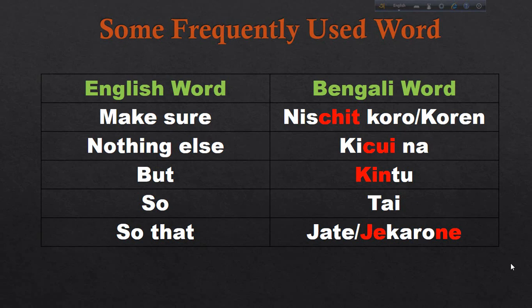In the first slide you can see 'make sure'. In Bengali we call it 'Nishchit Koro' or 'Nishchit Koren'. When you are talking with your friends or family, then you can say 'Nishchit Koro'. The respectful word is 'Nishchit Koren'. 'Nishchit Koro' is used for friends, family, and close persons, and 'Nishchit Koren' is used for your senior or respected persons.